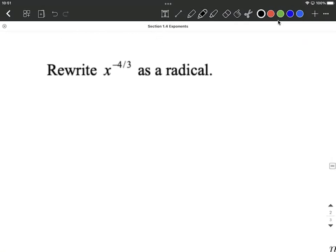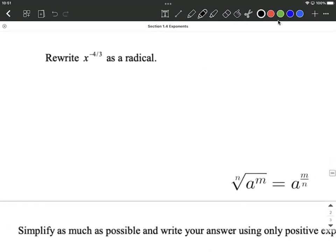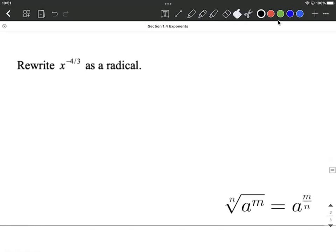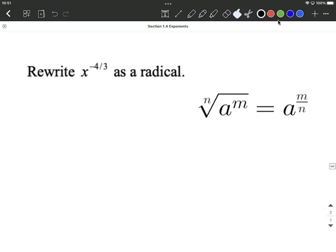Alright, one more. Rewrite this as a radical. So down below here, you can see I did go ahead and put our rule for this, lining everything up and getting comfortable with this. So writing as a radical, the first thing I may want to do in this case is write it so it's not negative. Okay, so we can move it down to the denominator and make it a positive exponent. So x raised to the positive 4 thirds power.